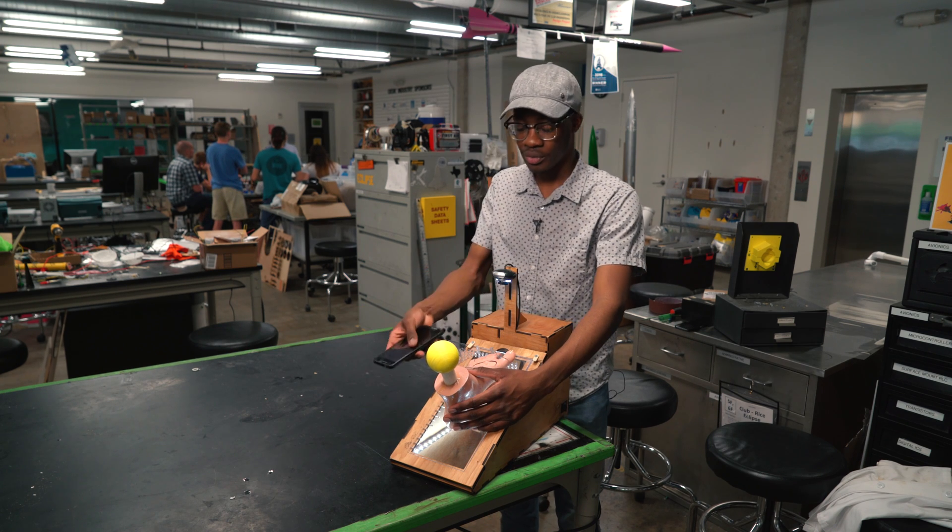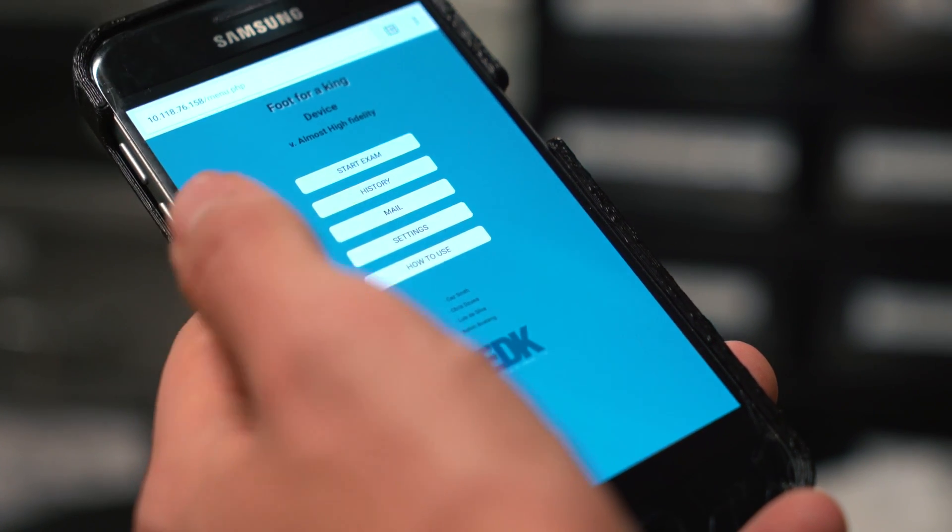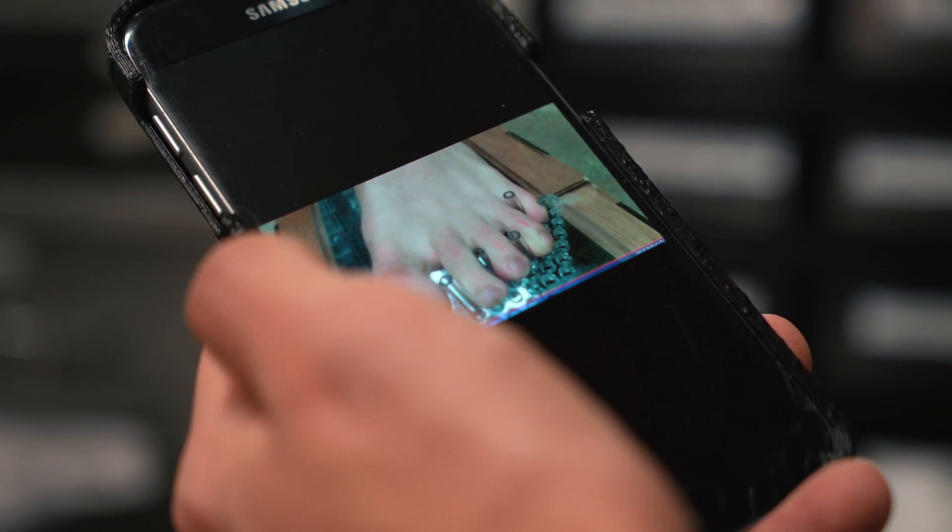You access the controls for the device on a webpage and you press the start exam button. The lights come on and the camera snaps a photo and sends it to you on the webpage.